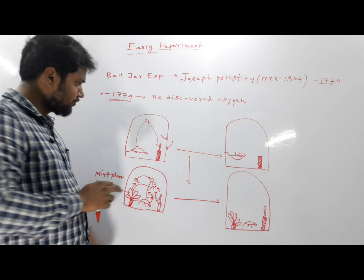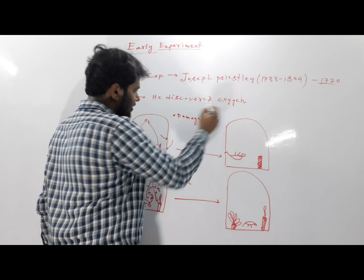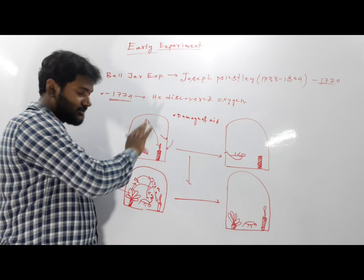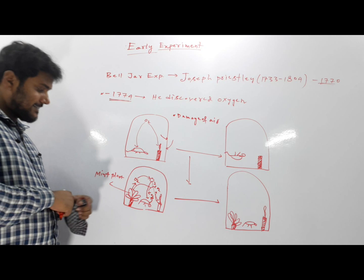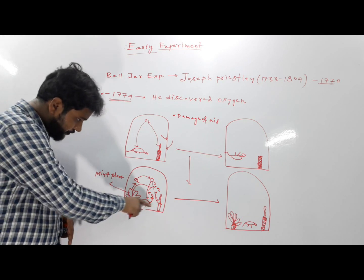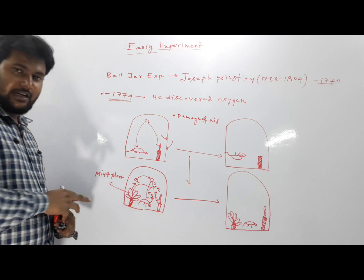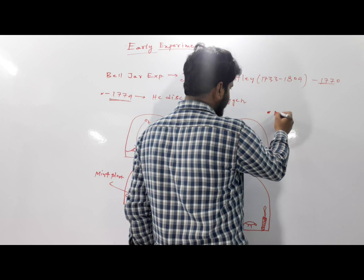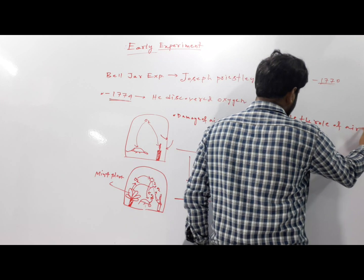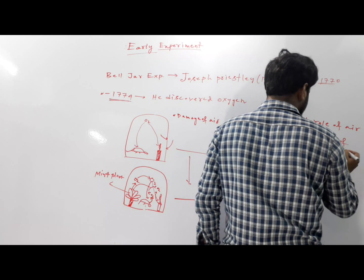Joseph Priestley used the term 'damaged air' — he said the mouse and burning candle damaged the air. And with the mint plant present, he said the mint plant restored whatever the mouse or burning candle had removed from the air. This experiment is very significant because it reveals the role of air in the development of the plant.